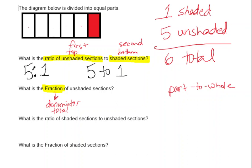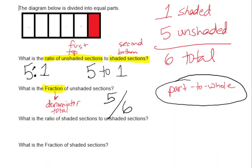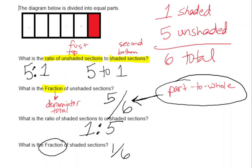What is the fraction of unshaded sections? That's how many are unshaded out of the total — a fraction is always a part-to-whole ratio. The ratio of shaded to unshaded is one to five. The fraction of shaded sections is one out of six total. I knew to use the total in the denominator because they said 'fraction.' You have to be careful because there are lots of ways to represent the same diagram with different ratios.